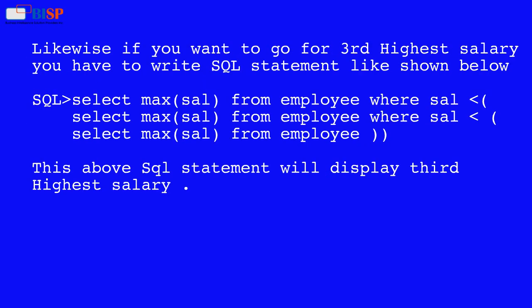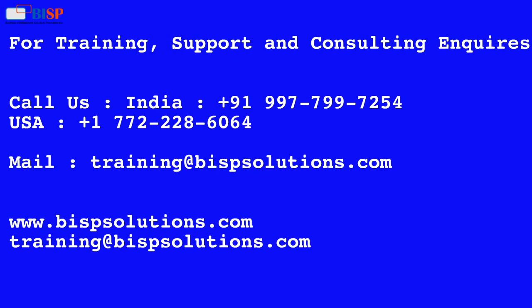Likewise, if you want to go for the third highest salary, you have to write the SQL statement like shown below: SELECT MAX(salary) FROM employee WHERE salary is less than SELECT MAX(salary) FROM employee WHERE salary is less than SELECT MAX(salary) FROM employee. This SQL statement will display the third highest salary.